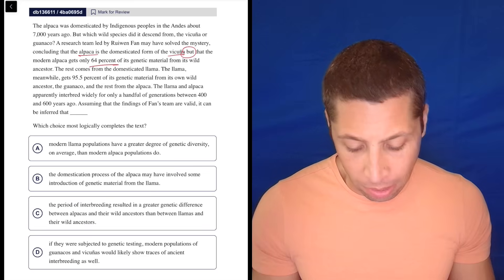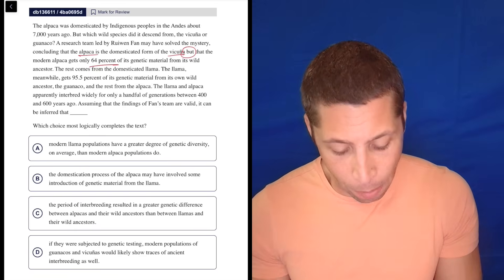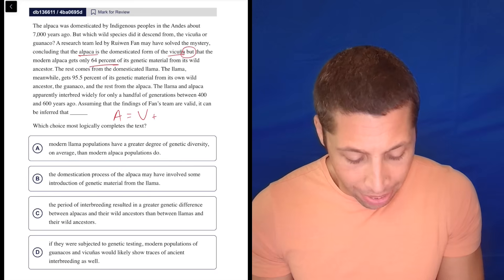The llama and alpaca apparently interbred widely for only a handful of generations, between 400 and 600 years ago. Assuming that the findings of fans' team are valid, it can be inferred that. So if we're answering the alpaca question, the alpaca is going to be mostly vicuña, right? But then some llama.